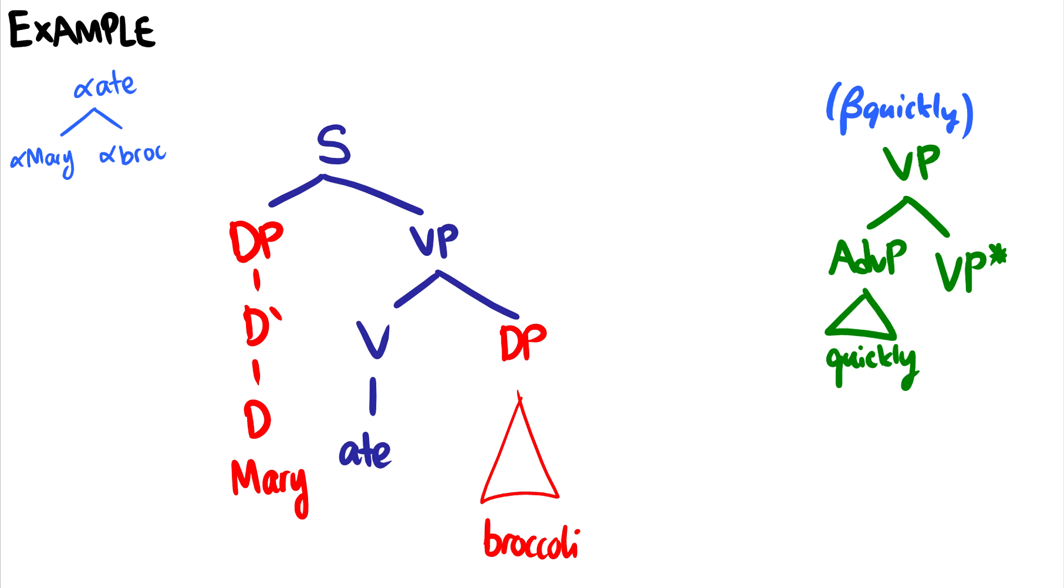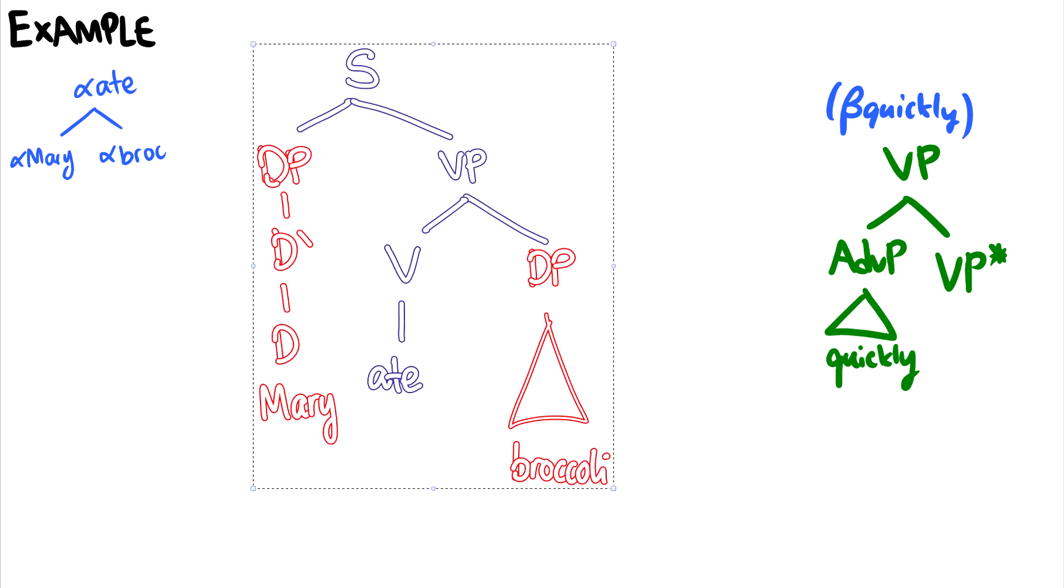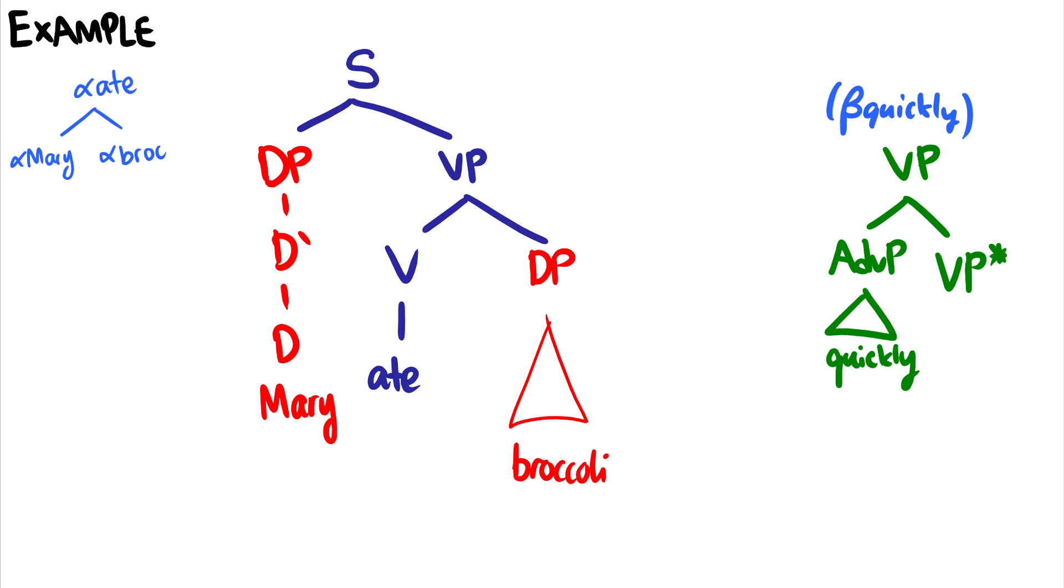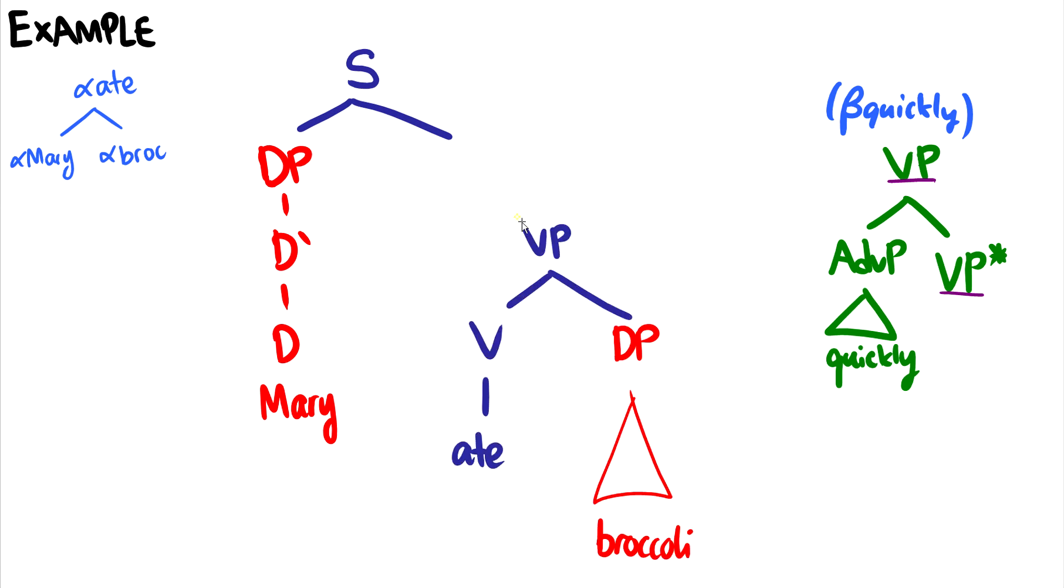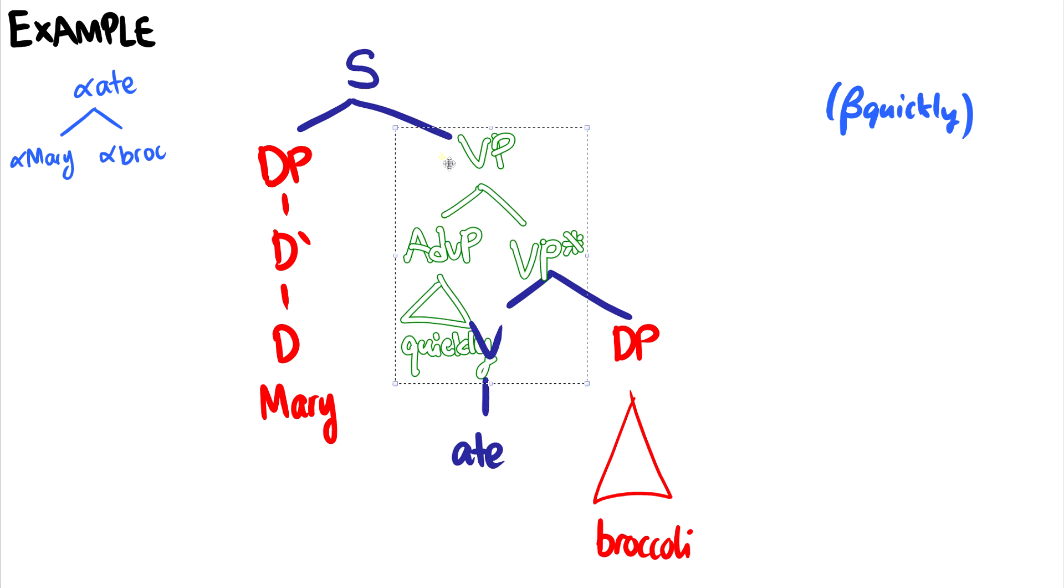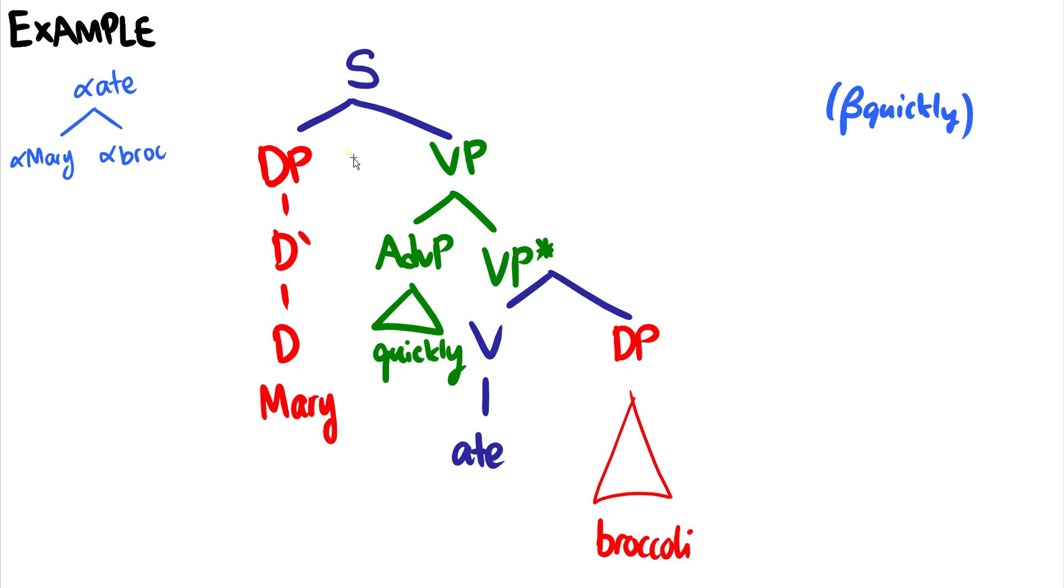And now we want to adjoin quickly. So if we can remember how adjoining works, let's bring this up a little bit. We're going to check to see which nodes we can substitute it in. So here we can substitute it in, or sorry, adjoin it in the VPs. So what we'll do is we'll break up this VP. I'm going to bring it down a little bit there. Then we'll get rid of this. And essentially what we'll do here is we're going to adjoin this. So we're going to copy this tree right into the center here. So this isn't fitting perfectly, but I can adjust this. So if we do some adjustments, now things look a little bit better. And that was the beta quickly, and we put it into the alpha ate tree. So we have beta quickly.